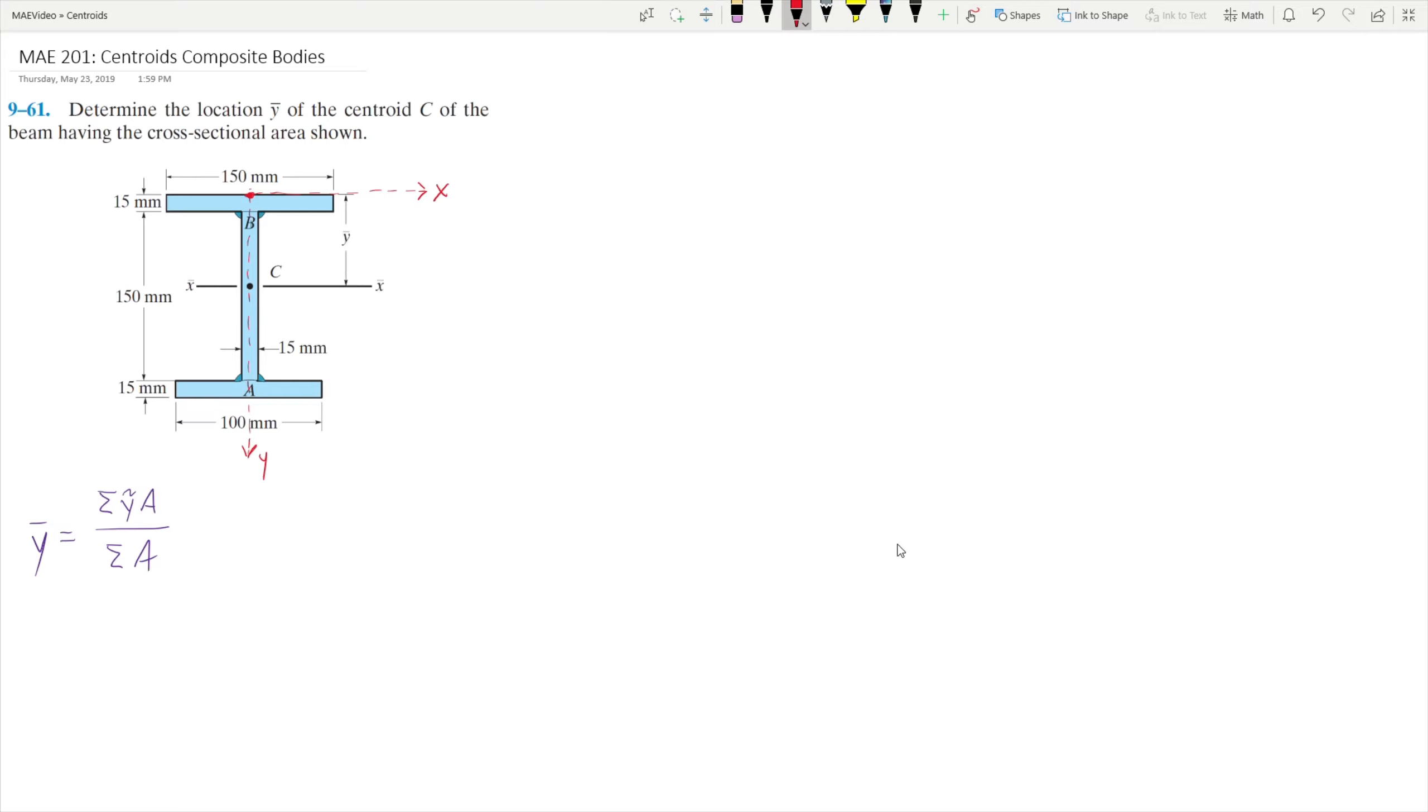To proceed with this problem, we're going to break up this body into multiple smaller bodies with easier geometries. Let's call this 1, let's call this body 2, let's call this body 3. I'm going to draw off to the side here those three bodies.